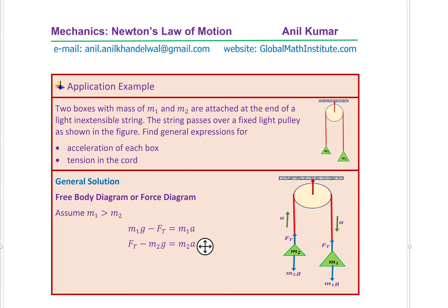When you want to solve such a question, the first step is to make a free body diagram. In this particular system, mass M1 being heavier, the system moves downwards with an acceleration A. When it moves downwards, the other side also moves upward with the same acceleration A since the string is inextensible. When the string is taut, there will be a tension in the string, and this tension is the same at all points of the string.